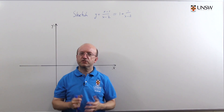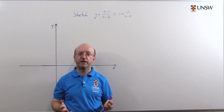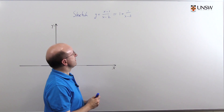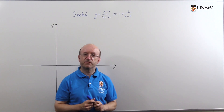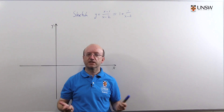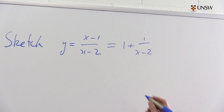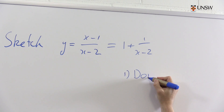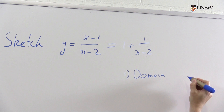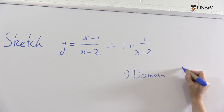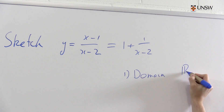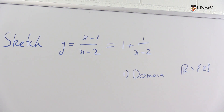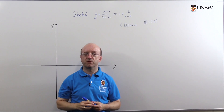Now the first thing we want to know is what's the domain — where is this function properly defined? It's quite clear that this function is defined for every x except x equals 2. So the domain is ℝ minus {2}: everything in ℝ except the point 2.